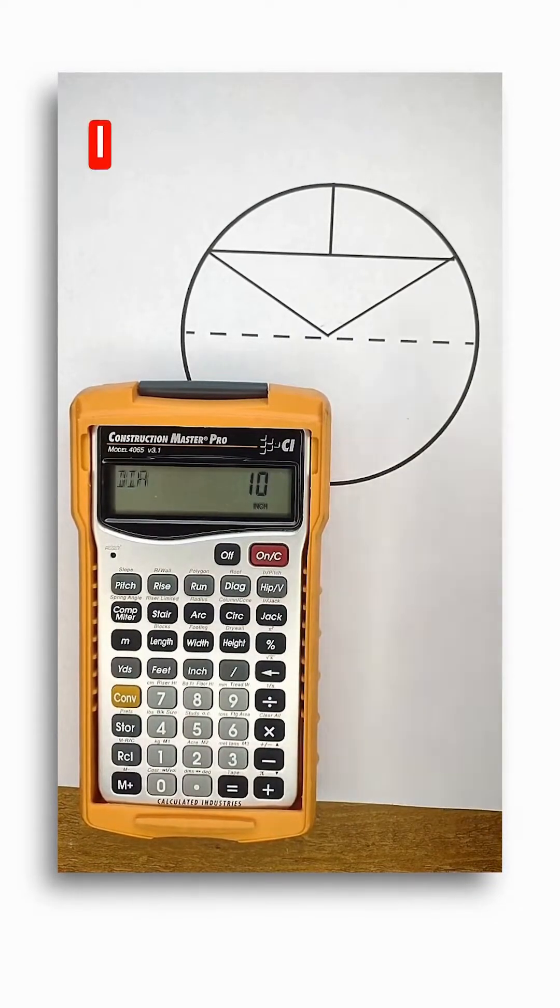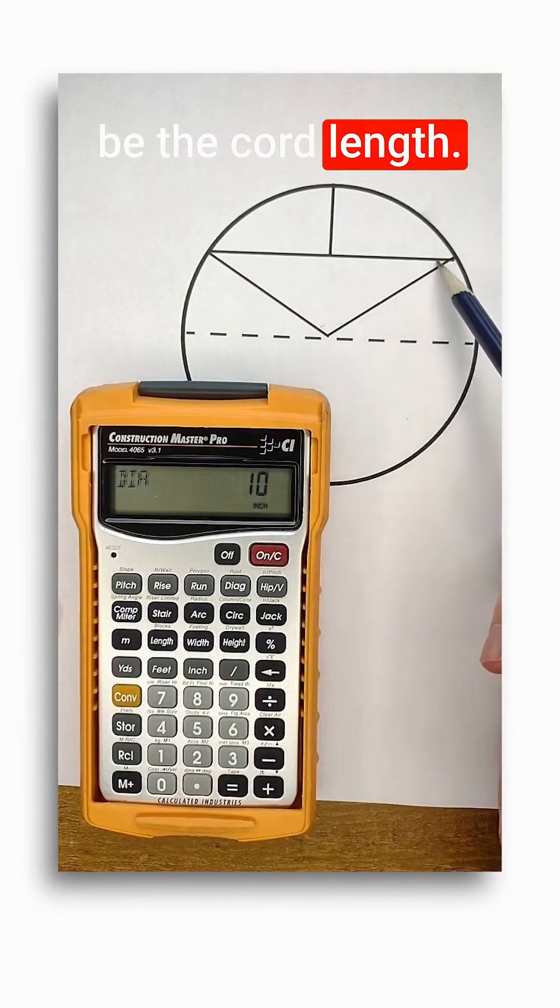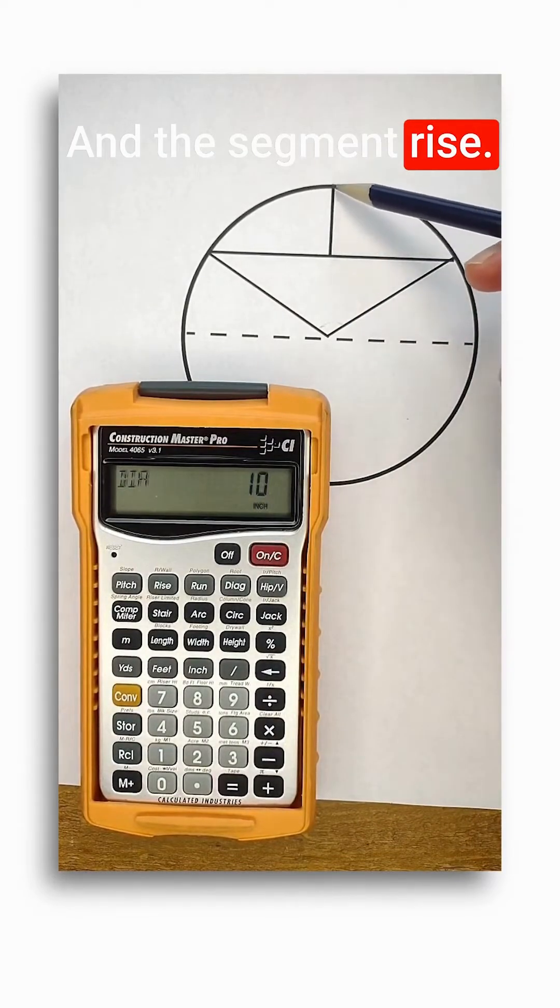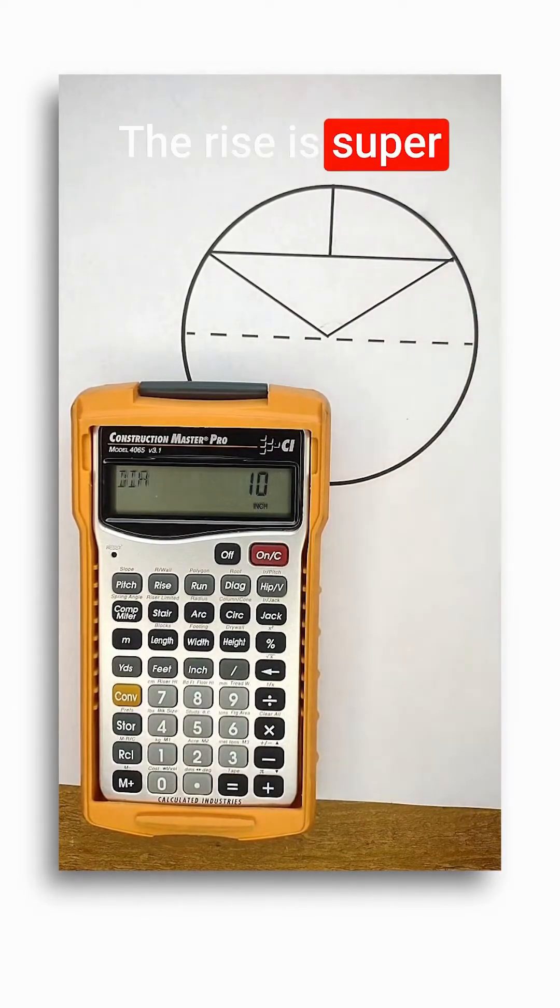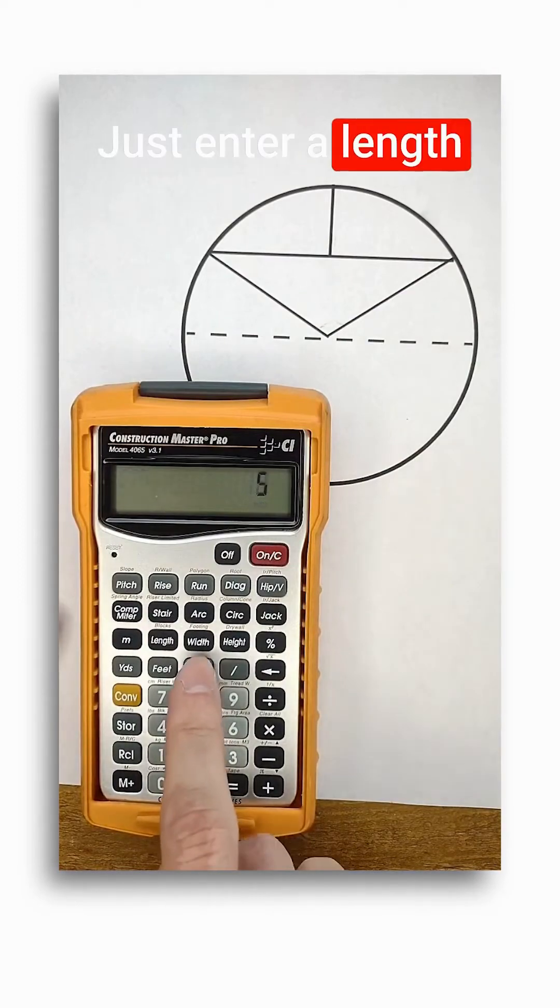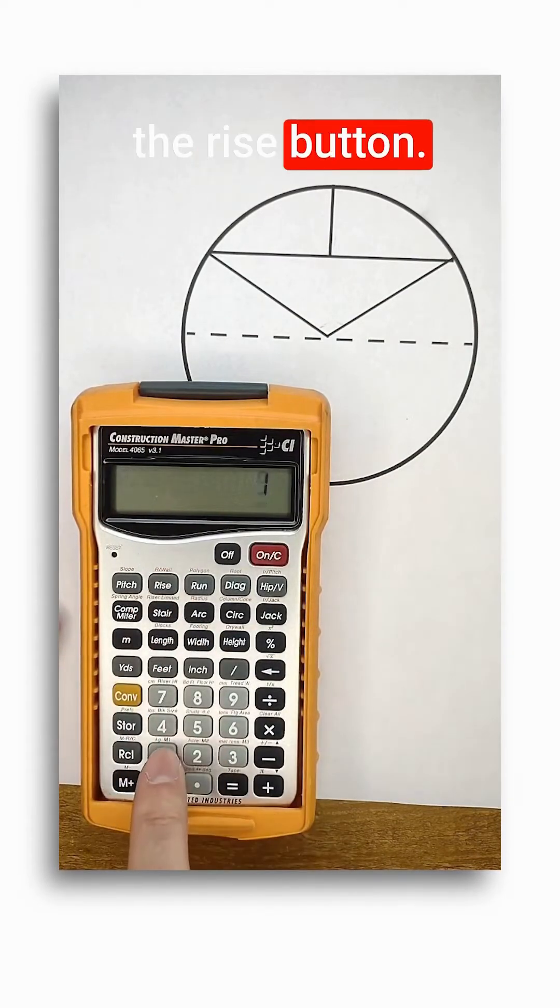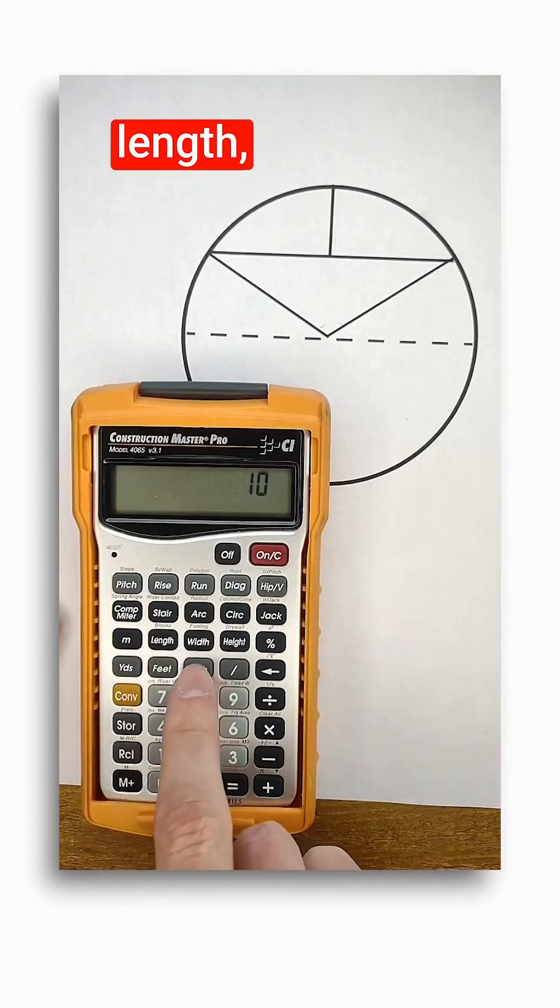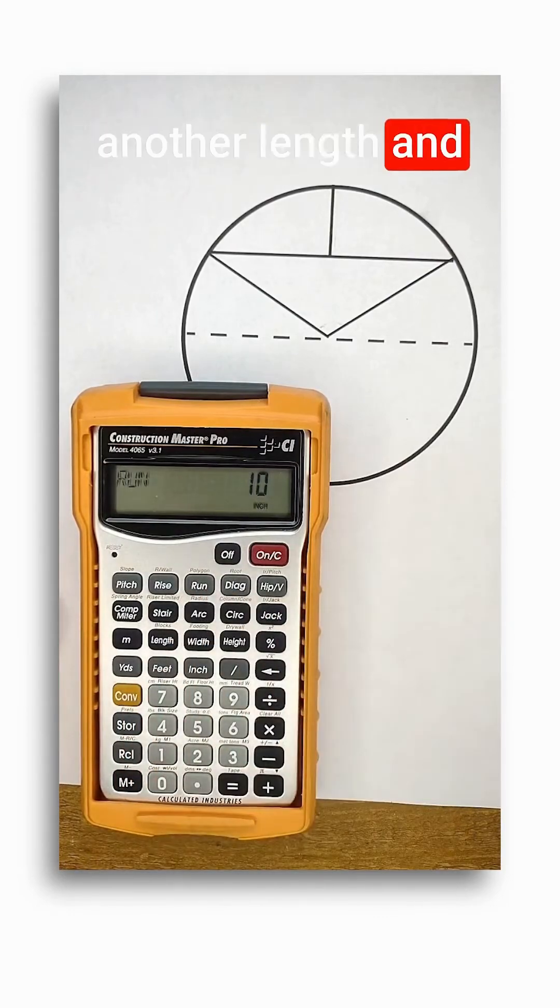The last two values I could enter would be the chord length and the segment rise. The rise is super easy to enter. Just enter a length and then push the rise button. And then for the chord length, just enter another length and push the run button.